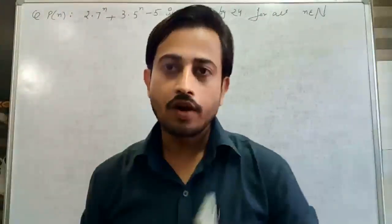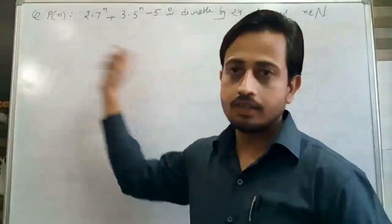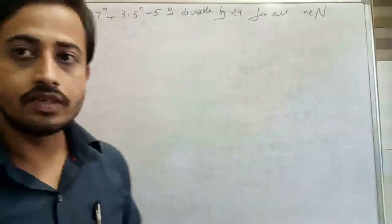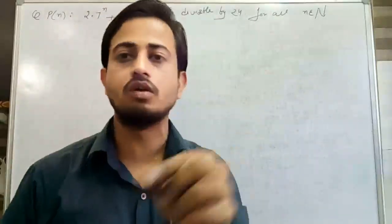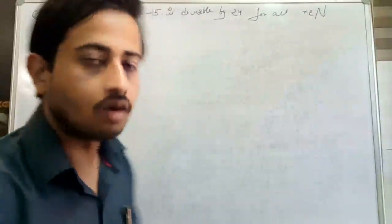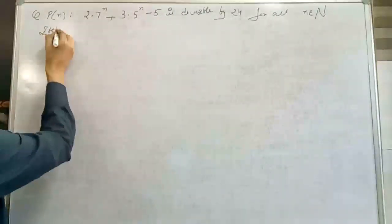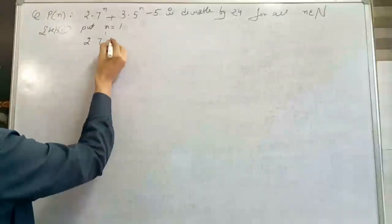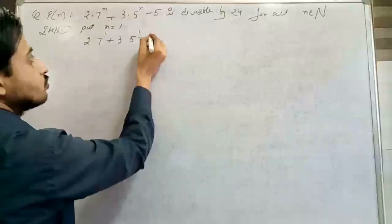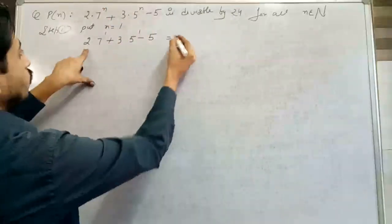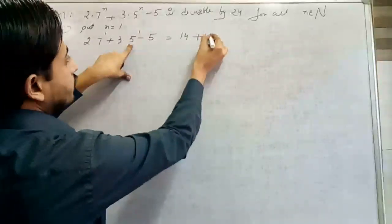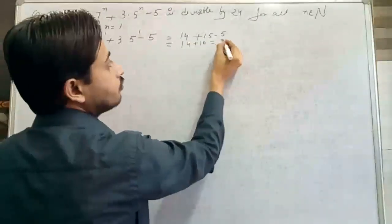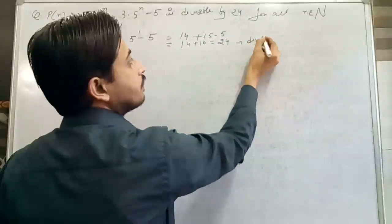Now I'm going to take another example: prove that 2·7ⁿ + 3·5ⁿ - 5 is divisible by 24. Step 1: Put n = 1. P(1) = 2·7 + 3·5 - 5 = 14 + 15 - 5 = 24. And 24 is divisible by 24. Statement is true.